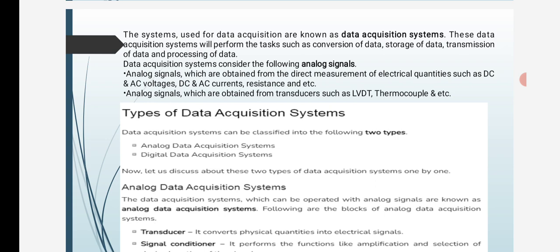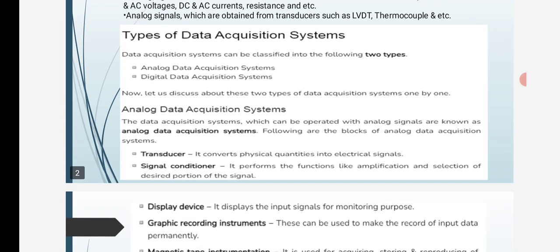Analog signals are also obtained from transducers such as LVDT and thermocouple. Data acquisition systems can be classified into two types: analog data acquisition systems and digital data acquisition systems.